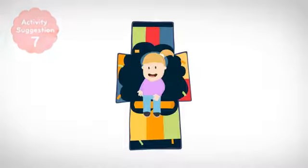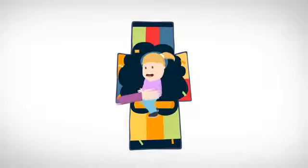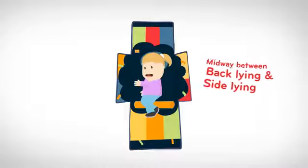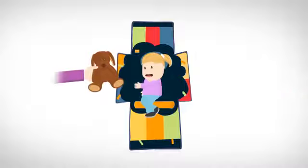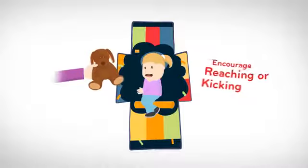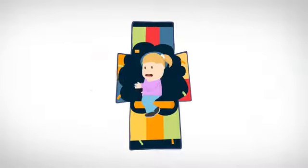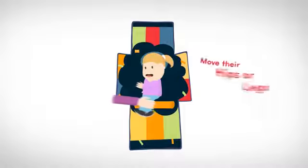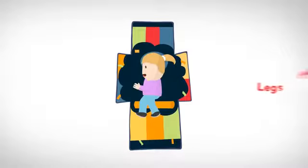This activity is great for encouraging rolling. I can place Charlotte midway between back-lying and side-lying, and can encourage her to reach or kick for a toy, so she can begin to learn to roll onto her tummy. Sometimes I help her to move at first by moving her hips or legs while she works to learn to turn her shoulders.